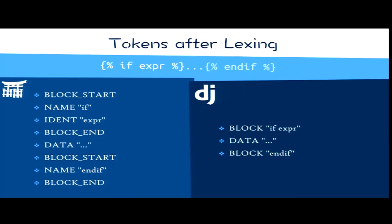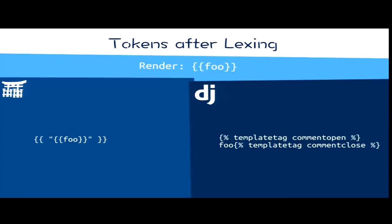If you have the statement `{% if expression %}`, in Jinja the parser creates tokens: block start, the name 'if', an identifier expression, block end, then data, and so forth. In Django it's just 'block if expr, data, block endif' — and this whole string needs a second-stage parse to break it into smaller things. In Jinja, because it knows which state it's in, it can include the whole thing in itself and it's fine. Does anyone actually use the Django double-brace comment syntax? How do you handle embedding JavaScript that includes that?